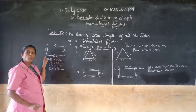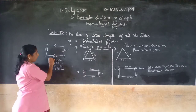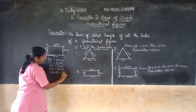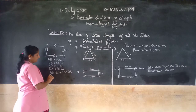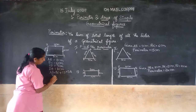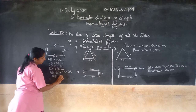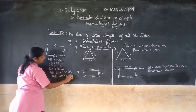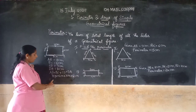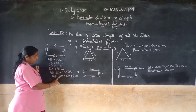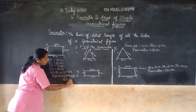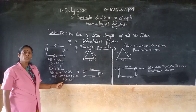This is the boundary of this geometrical shape. What is the total length? So to find out the total length: AB plus BC plus CD plus DA. AB is 8 cm, BC is 6 cm, CD is 7 cm, DA is 4 cm. Adding all these sides: 8 plus 6 is 14, 14 plus 7 is 21, 21 plus 4 is 25 cm. That is called the perimeter.